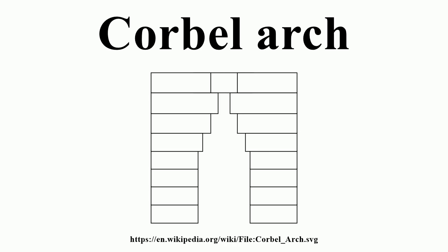A corbel arch is constructed by offsetting successive courses of stone at the spring line of the walls so that they project towards the archway's centre from each supporting side, until the courses meet at the apex of the archway.